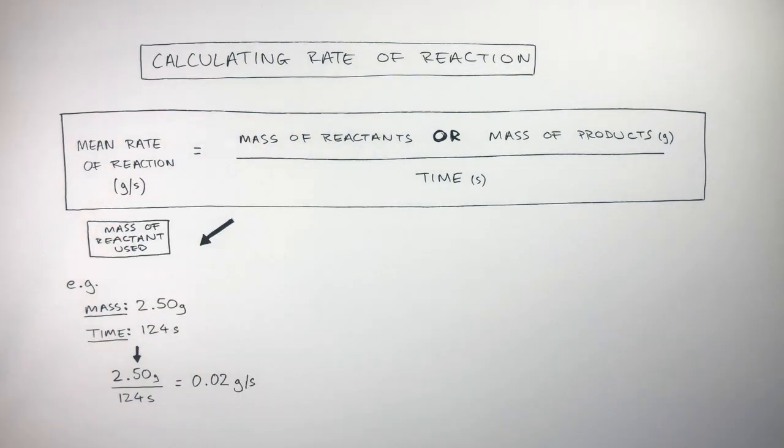This means how many grams are being used up or formed per second. The more grams used or formed per second, the higher the rate of reaction.